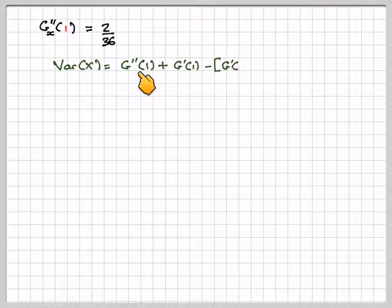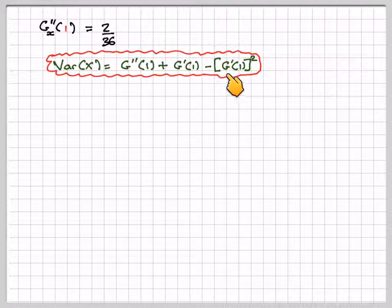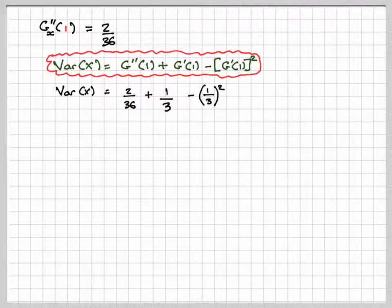So the variance of X is G''(1) plus G'(1) minus [G'(1)]² all squared. So the variance of X is going to be 2 out of 36, plus 1/3, minus 1/3 squared. So that's going to be 5 out of 18 when you work it out.